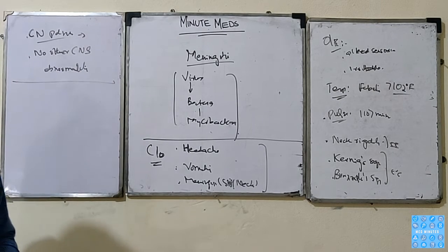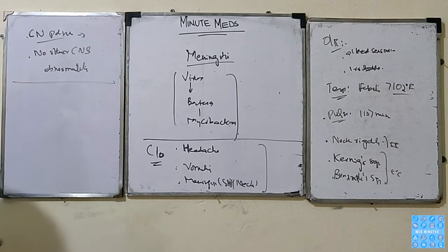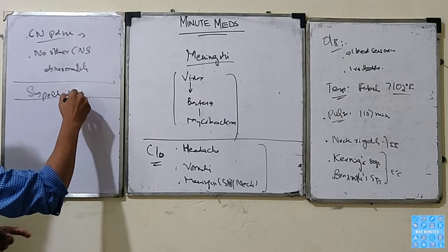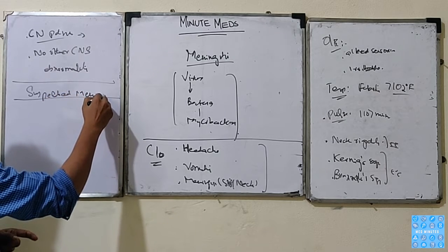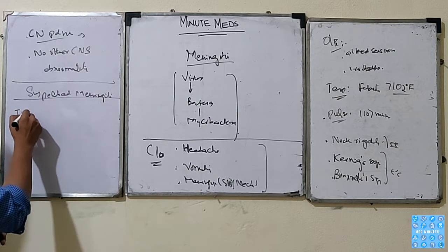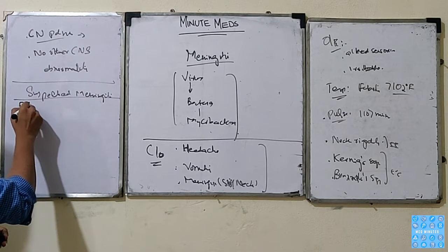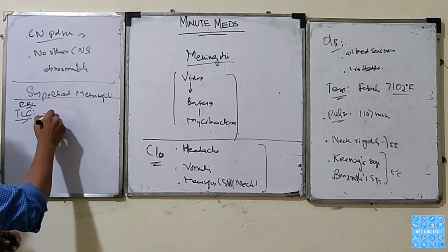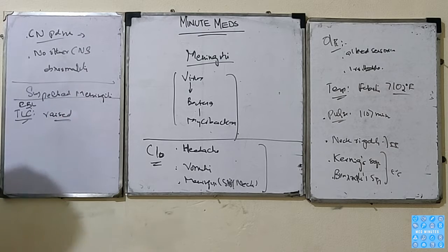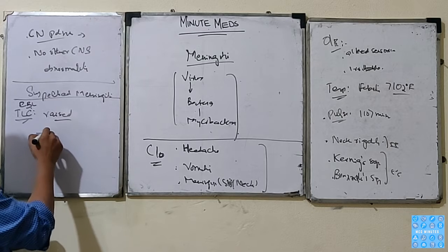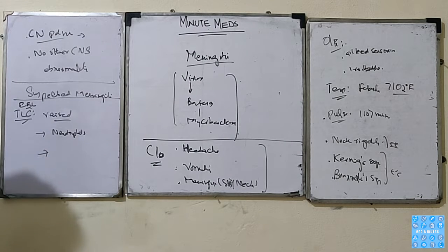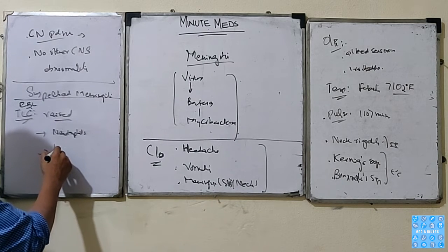How to proceed with the workup of a patient with suspected meningitis? We start with basic workup: a full blood count, the CBC. The total leukocyte count is usually raised because there is infection. If there is bacterial infection, predominant neutrophils are raised. If this is a chronic infection like tuberculosis, then there is predominance of lymphocytes.